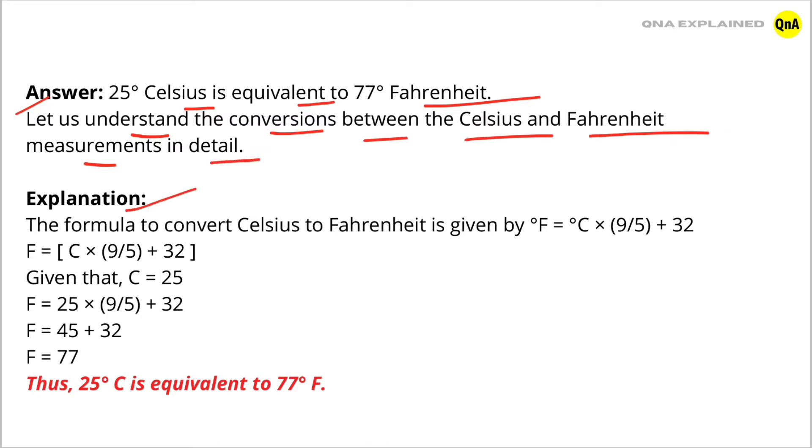Explanation: The formula to convert Celsius to Fahrenheit is given by F = C × (9/5) + 32.